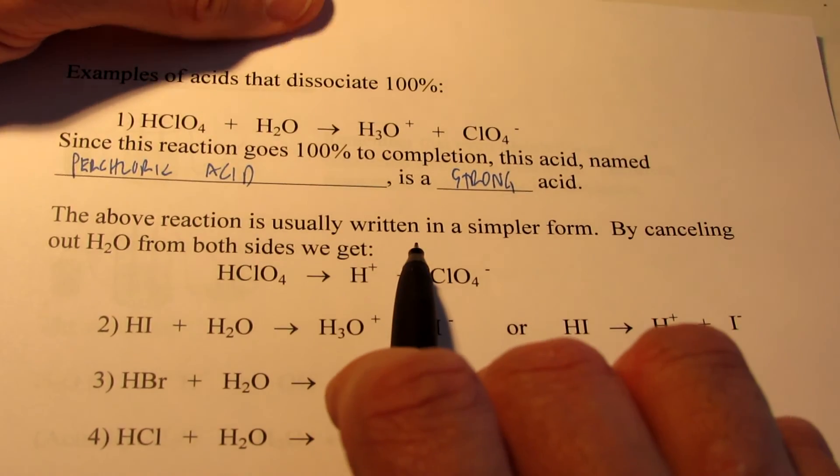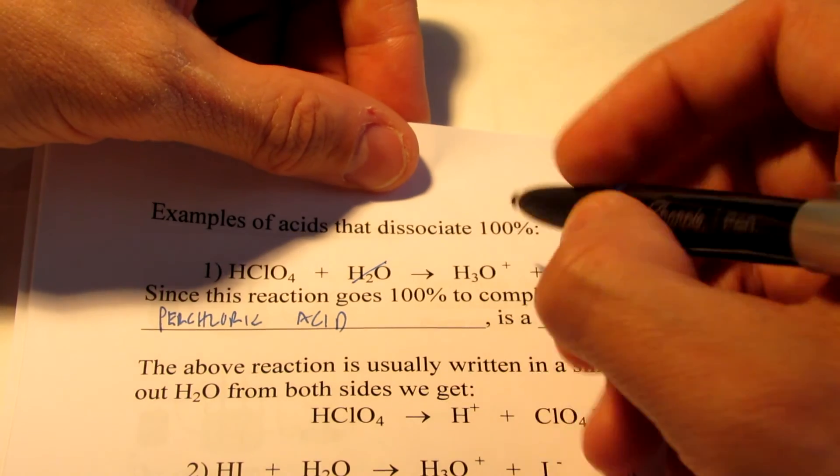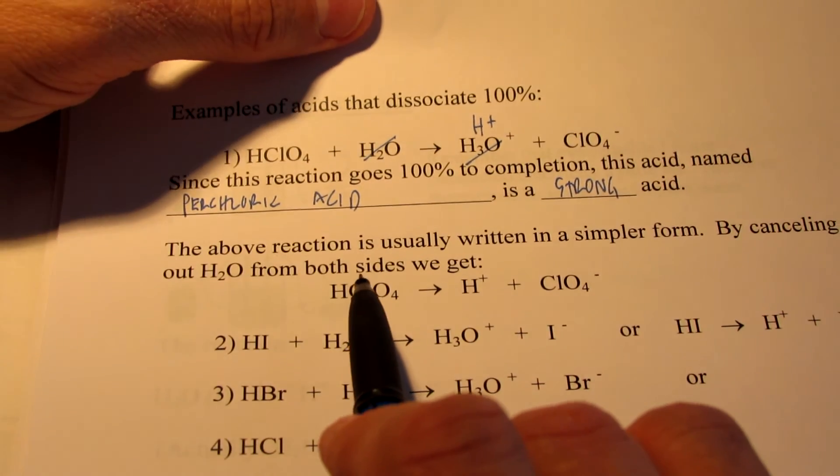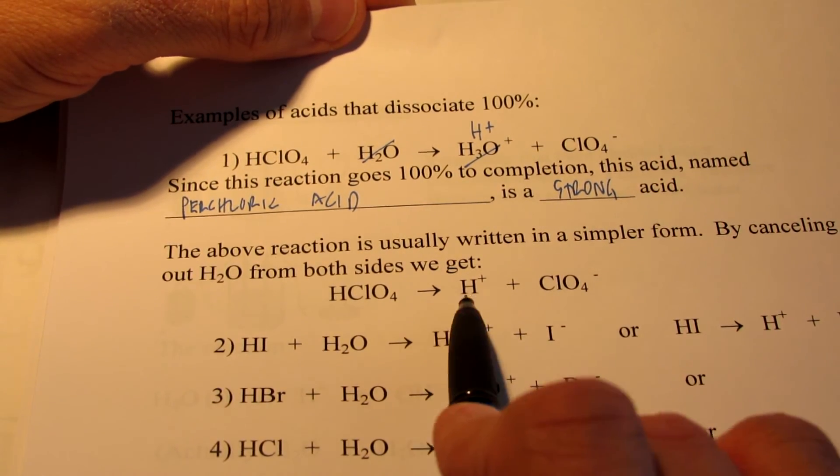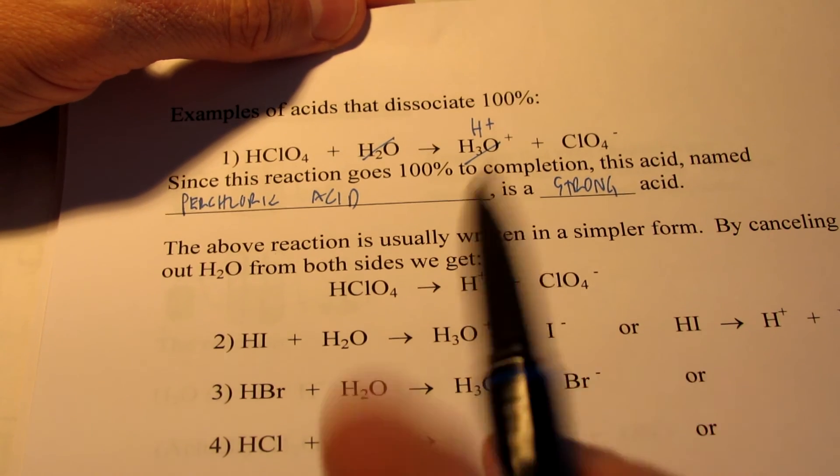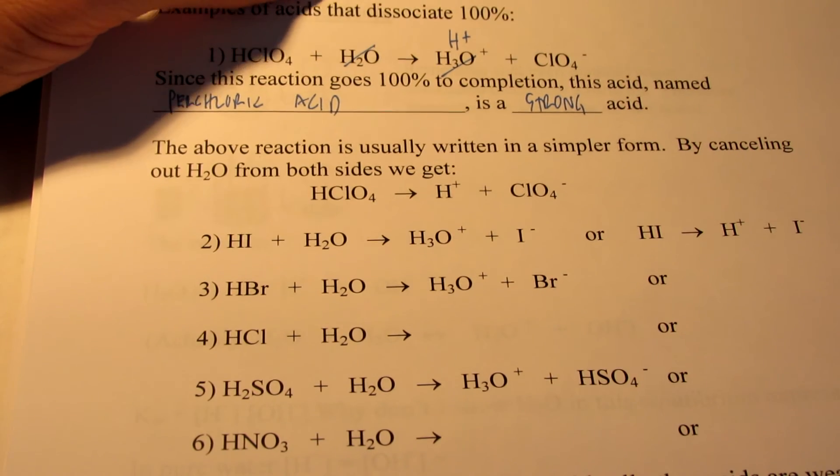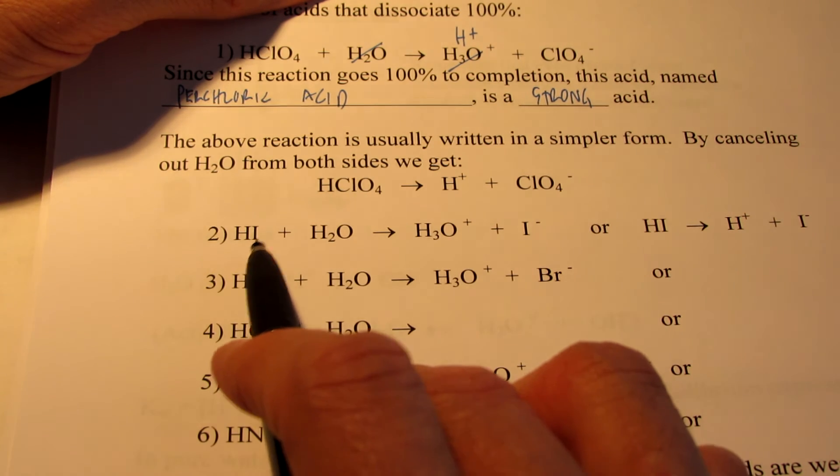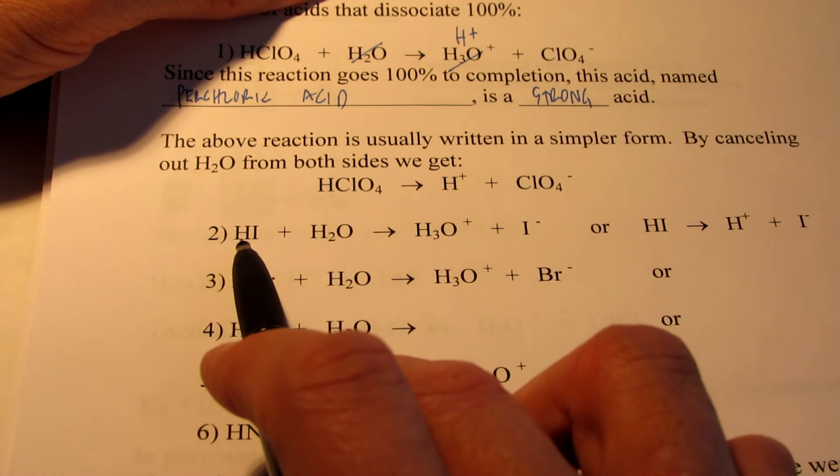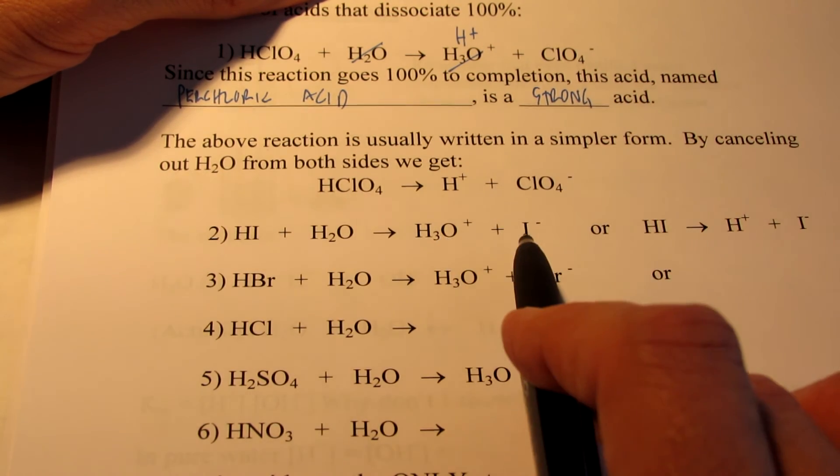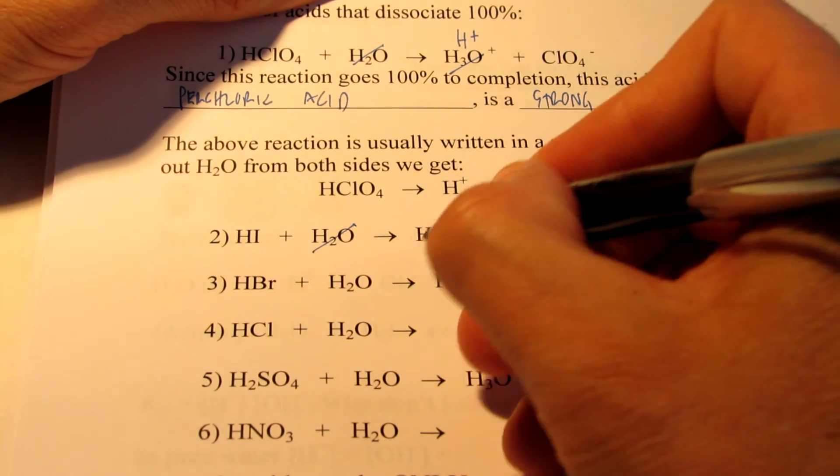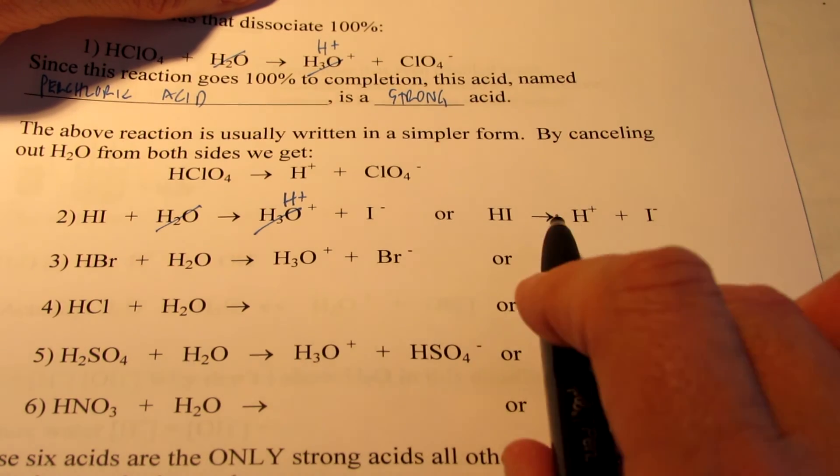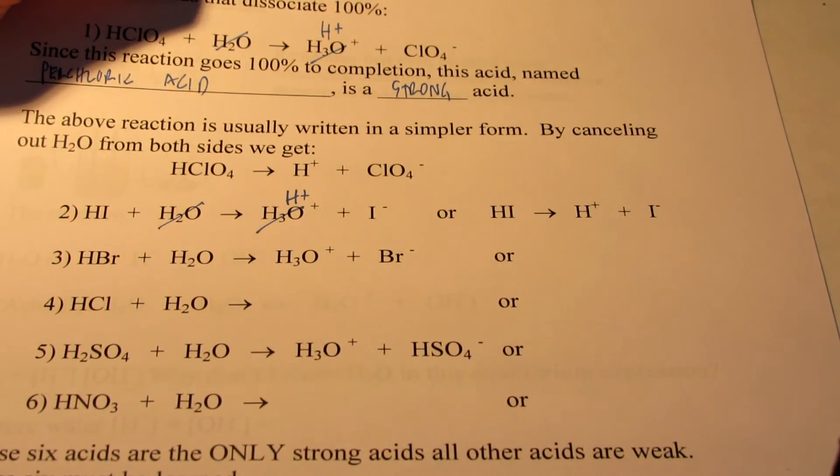We usually simplify this a little bit. We usually cancel water out of both sides of this reaction just to make it look a little prettier and easier for chemists to write. So we usually would write HClO4 reacts to form H+ and ClO4 negative when dissolved in water. Let me do a few more examples. HI is another strong acid, called hydroiodic acid. When I place this in water, the water will take that proton away all the time and become H3O+, and leave me with I negative. If I get rid of the water from both sides, I end up with HI forming H+ and I negative. Notice the arrow going in one direction telling us that it's a strong acid.